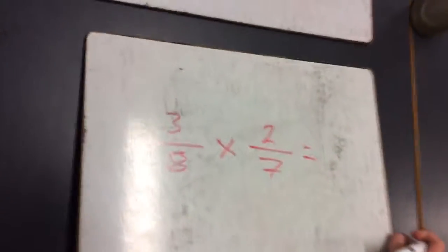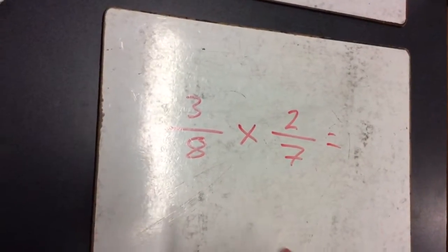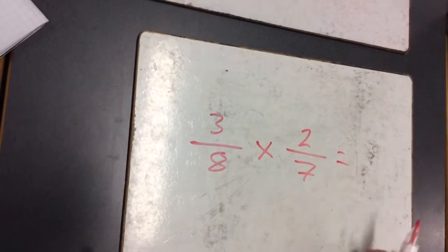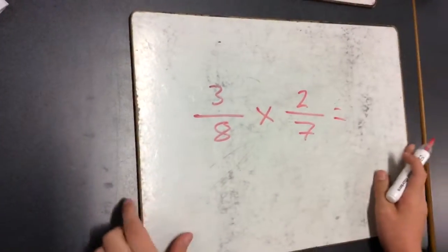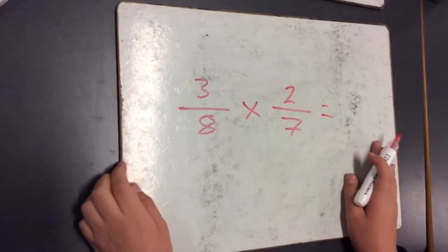I've got an equation already set up: 3 eighths times 2 sevenths. It's actually quite simple to do if you already know your multiplication tables.